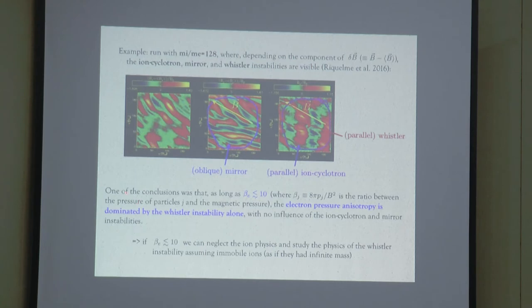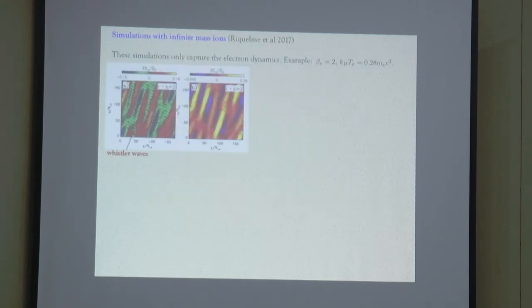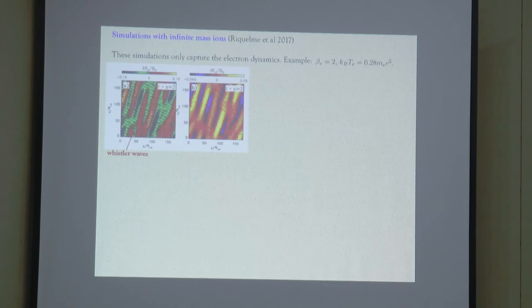We assume the ions have infinite mass and focus only on the electron dynamics. In our work last year, we assumed an electron temperature of 0.28 times the rest mass energy — mildly relativistic electrons — trying to reproduce conditions close to the event horizon, around 10 Schwarzschild radii away. We ran simulations where we amplify the magnetic field and produce Whistler waves.